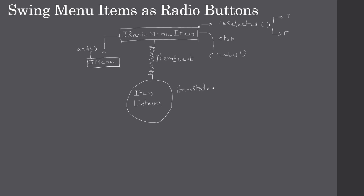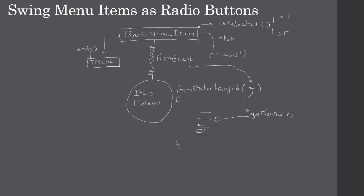Here we are not using an anonymous inner class. That means if we add four JRadioMenuItems and all of them register the same listener, all four will make a call to itemStateChanged. That's why, from the incoming event e, we need to call getSource to know which particular radio button originated the item event. GetSource will return the JRadioMenuItem, and then we can call isSelected to tell whether that particular radio menu item is selected or not.